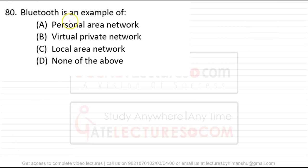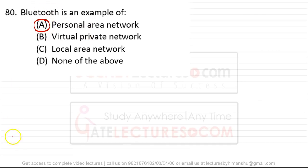Question 80: Bluetooth is an example of which network? Bluetooth is a short-range device used only for personal area networks (PAN). Question 82: the structure or format of data is called syntax. Syntax defines the format and rules of a data type, while semantics defines the meaning.